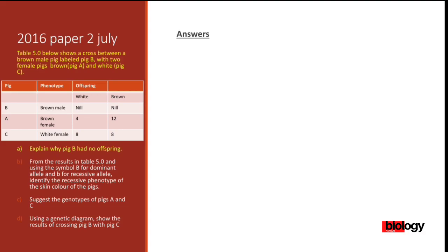Question A: Explain why pig B had no offspring. Why is it that this brown male pig, as you can see on the table, has zero offspring? The answer is simple: because big B is a male. There is no way a male can have offspring. The offspring cannot come out from the male; they come out from the female. So big B is a male — that is the reason why it didn't produce any offspring.